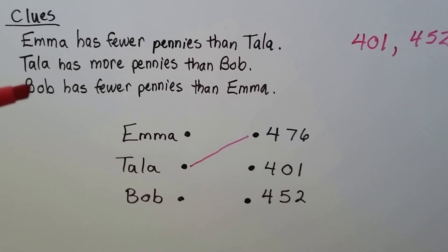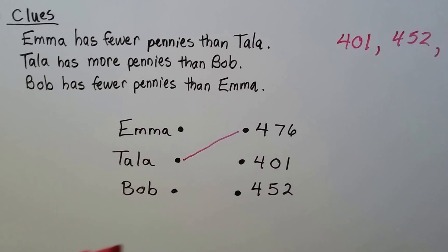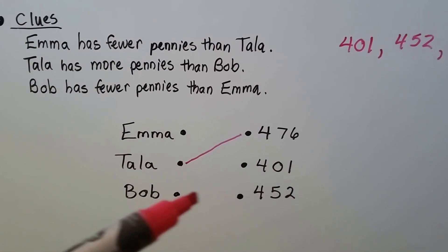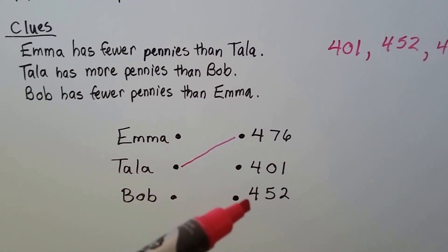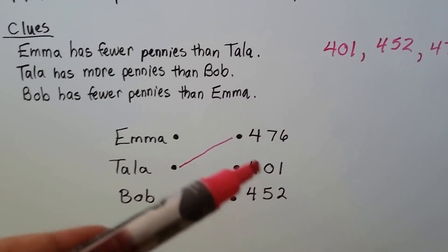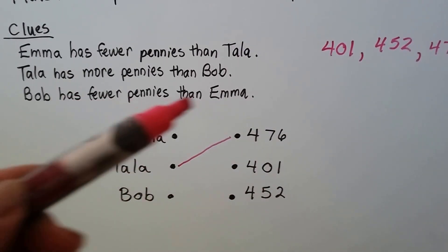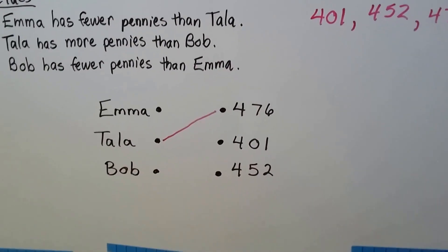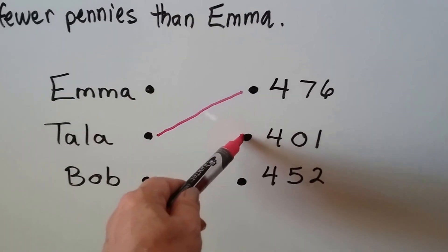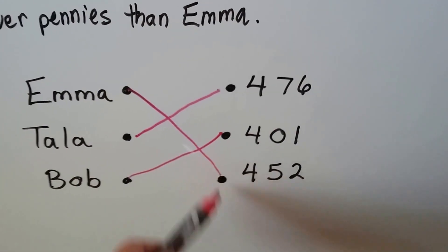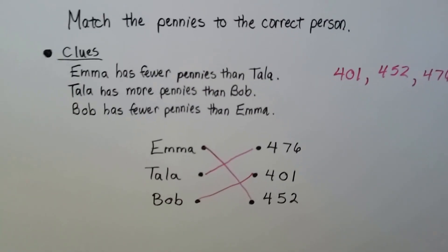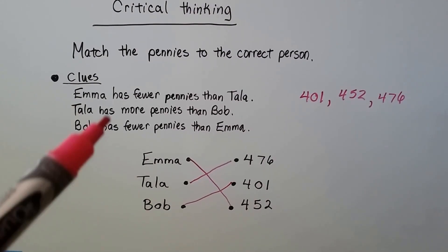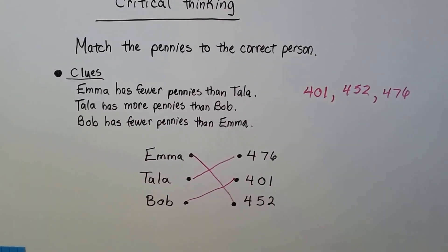It also says that Bob has fewer than Emma. We've got two people left and two numbers. Could Bob be 452? No, because that's more than 401, and Bob has fewer than Emma. So Bob must have 401, and that means Emma has 452. We were able to use the clues and words to figure out who had more and who had less.